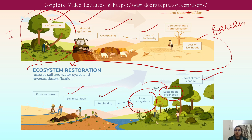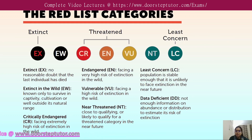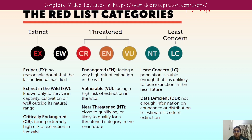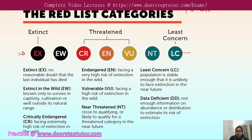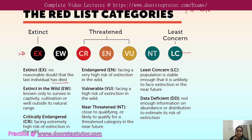The IUCN Red List categories define the extinction risk of species assessed. Nine categories range from 'Not Evaluated' to 'Extinct.' Extinct species are those not currently available — they have died and no gene pool remains.